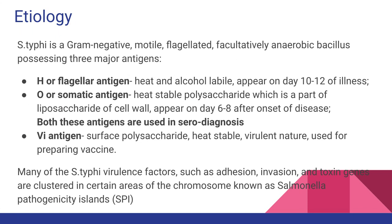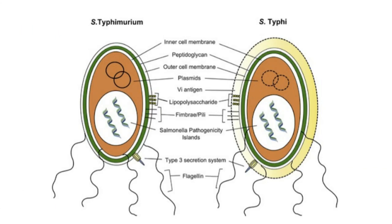The third antigen is the Vi antigen, which is a surface polysaccharide. It is heat stable and Vi stands for virulent, so it is virulent in nature. This antigen is used for preparation of vaccines because antibodies against the Vi antigen are protective in nature.